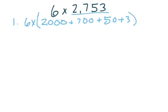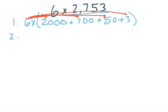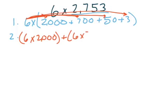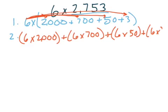Our next step, step number two, is to distribute. So I'm going to take my six and distribute it to all of my numbers: six times two thousand, plus six times seven hundred, plus six times fifty, plus six times three.